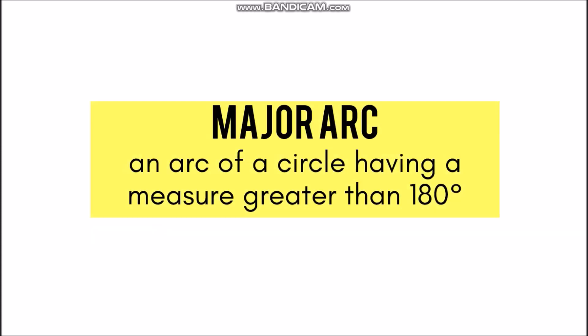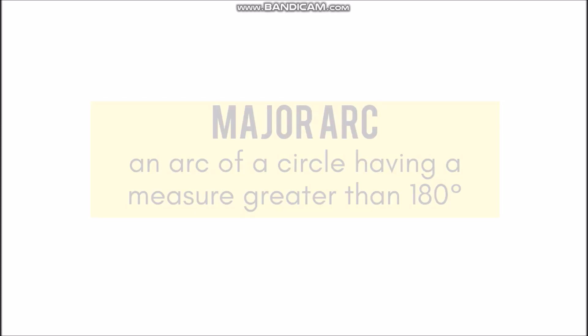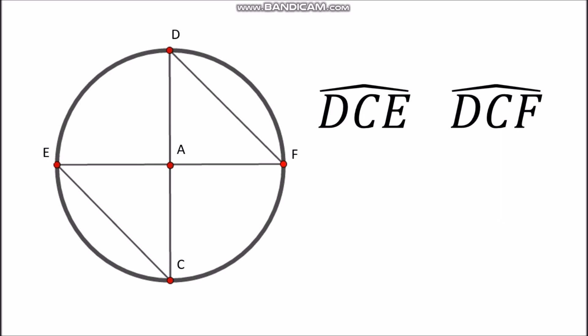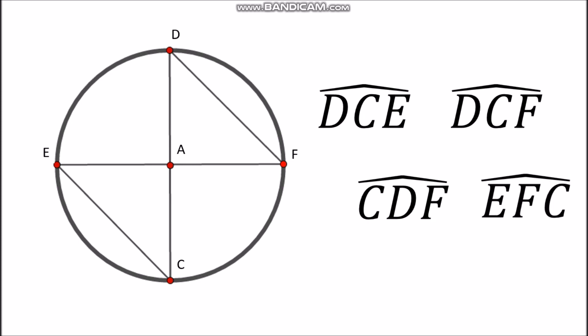Whenever we name a semicircle, we must use three letters so that we can identify what part of the circle we are referring to. We also have major arc. A major arc is an arc of a circle having a measure greater than 180 degrees — these are arcs greater than a semicircle. For example, we have arc DCE, arc DCF, arc CDF, and arc EFC. Major arcs must be greater than a semicircle, and you should also use three letters in naming them.